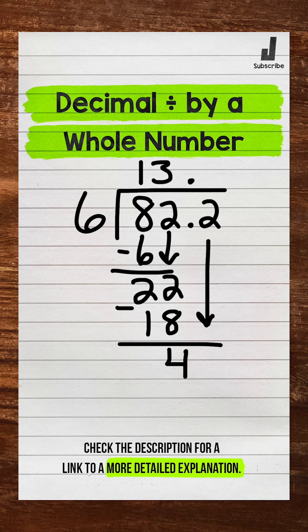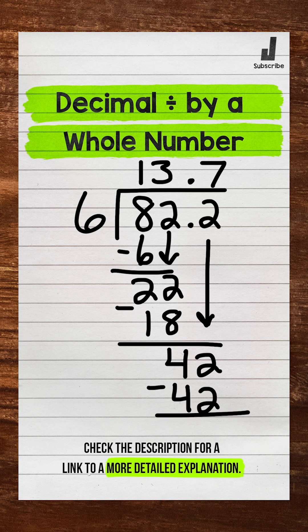And then bring down. So now we have 42. And we repeat. We go back to divide. 42 divided by 6 is 7. Seven whole groups of 6 in 42. Now multiply. 7 times 6 is 42. Subtract. 42 minus 42 is 0. And we are done.